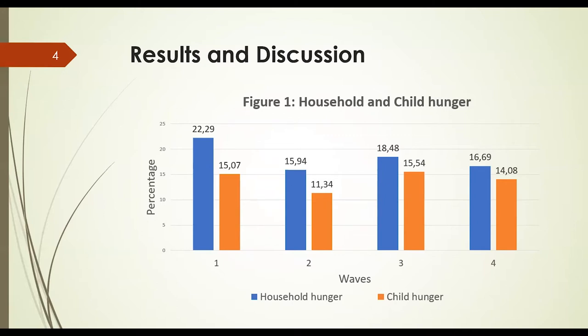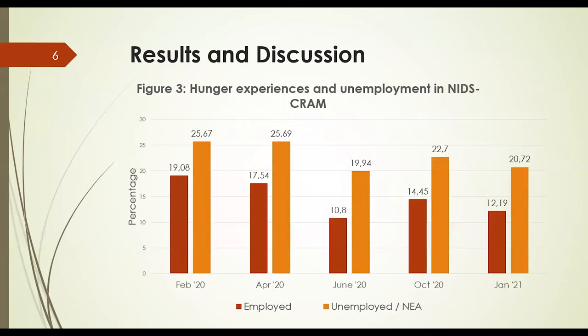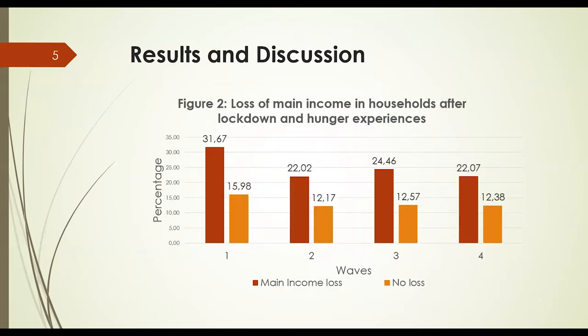In the second figure, we see that households that lost their main source of income during the lockdown experienced more hunger than those that did not. Hunger experiences, however, reduced drastically in the second wave, which coincided with the introduction of the SRD grants — falling from 31.67 percent in the first wave to 22 percent in the second wave.